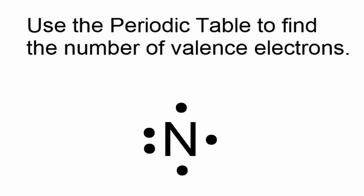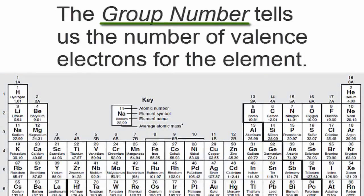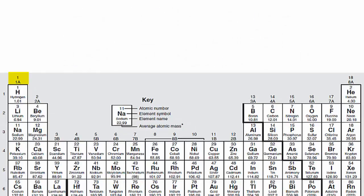We can find the number of valence electrons using the periodic table. The group number tells us the number of valence electrons for the element. For example, hydrogen has one valence electron because it's in group 1, sometimes called 1A.